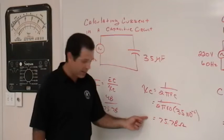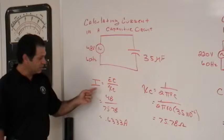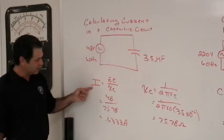We get a value of 75.78 ohms. Now we have that value of capacitive reactance. We can put it into our formula for calculating current.